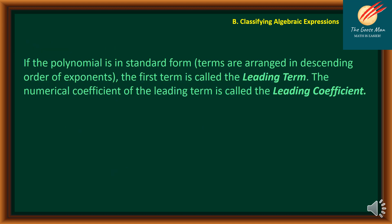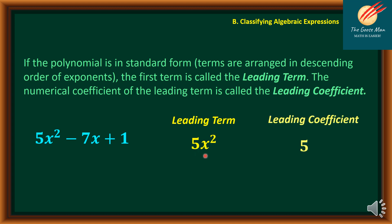If the polynomial is in standard form, meaning the terms are arranged in descending order of exponents, the first term is called the leading term, and the numerical coefficient of the leading term is called the leading coefficient. For example, in 5x squared minus 7x plus 1, the polynomial is arranged in descending order with the highest exponent of 2, so the leading term is 5x squared and the leading coefficient is 5.